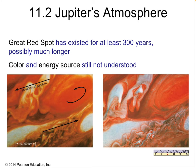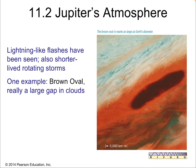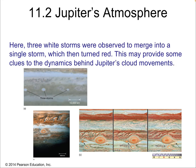The Great Red Spot has existed for at least 300 years based on observation — astronomers have been observing it since around Galileo's time. The color and energy source are still not fully understood; complex chemical reactions are an active field of study. Lightning-like flashes have been seen, as well as shorter-lived rotating storms. An example is the brown oval, a large gap in the clouds over 5,000 km across but more unstable. Three white storms were also observed to merge into a single storm, which then turned red, suggesting that higher energy had some effect on the color.